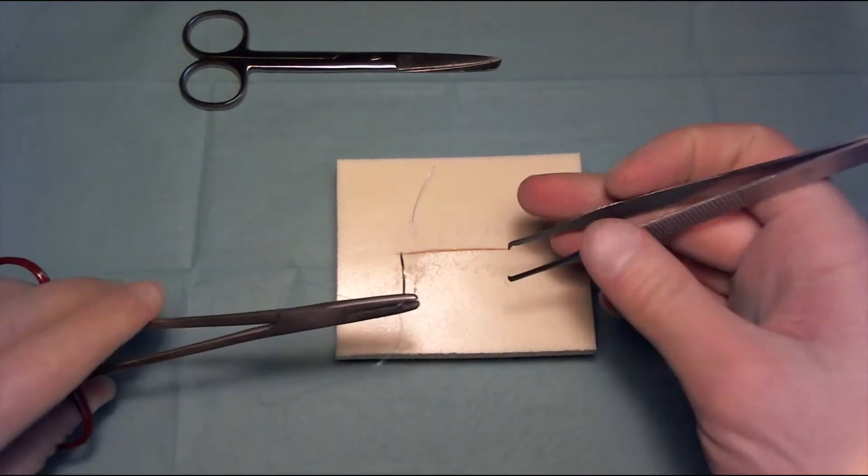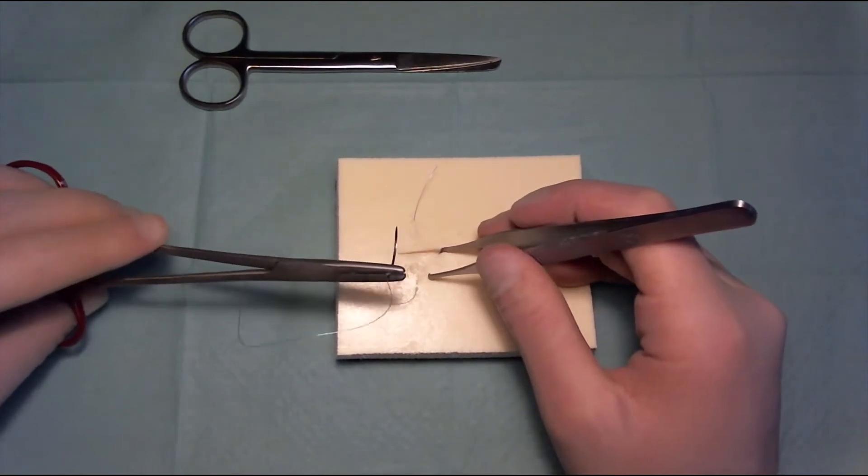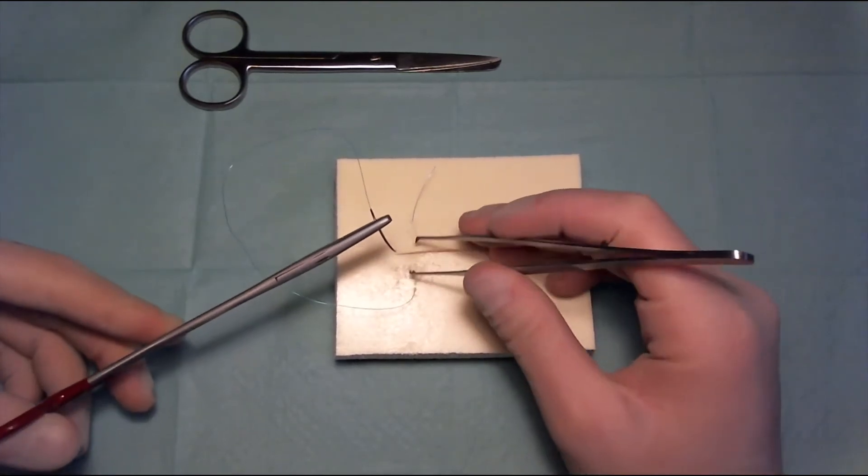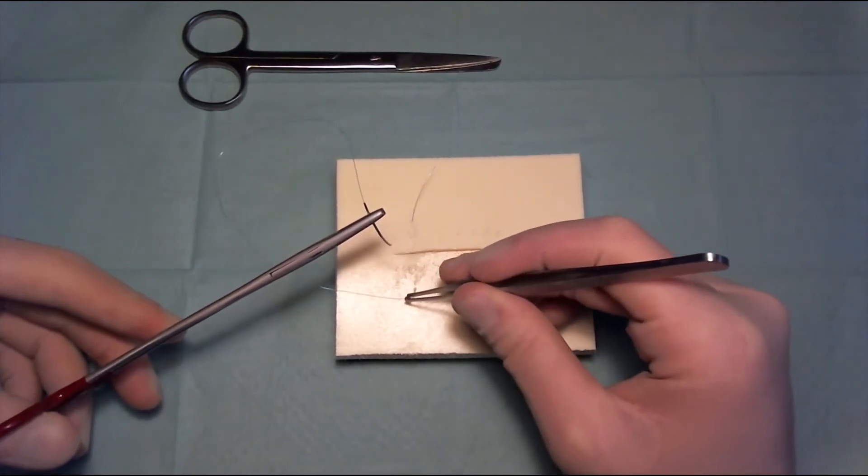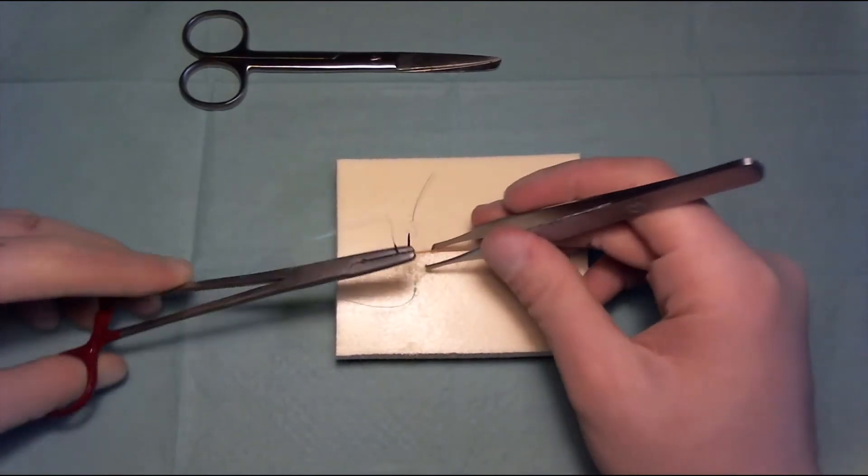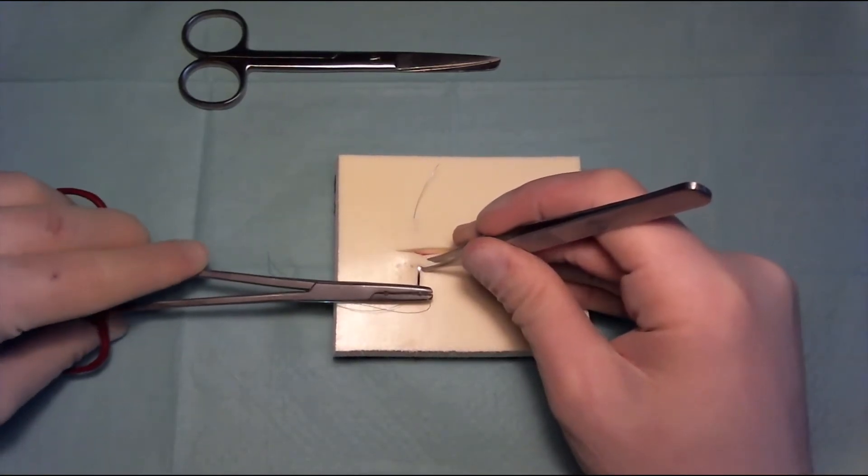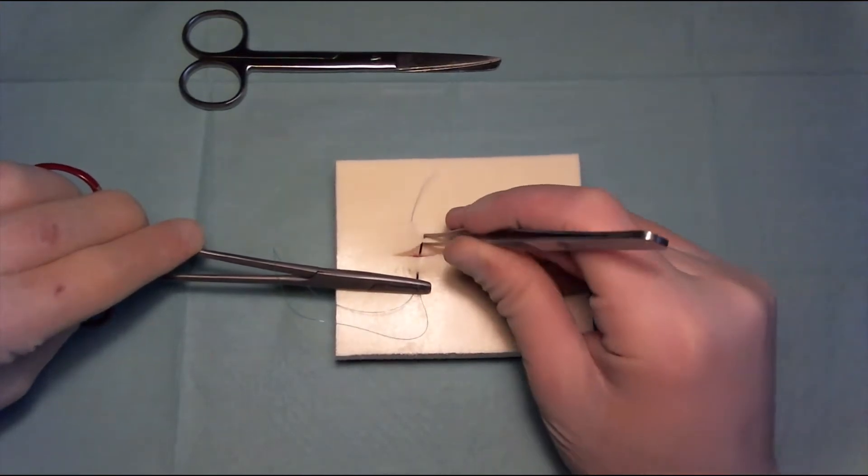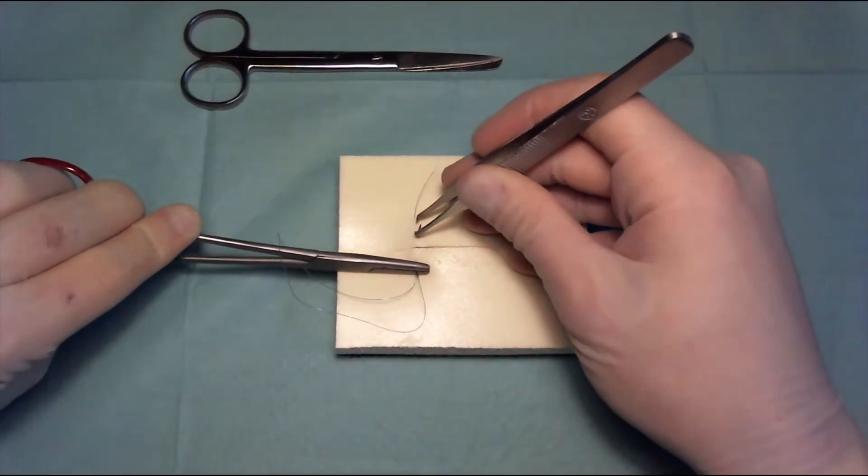This is backhand, so now we're going to do another simple suture but between the legs that we already have. This is our long leg, this is our short leg, and we're just going to do a simple interrupted suture between those two.